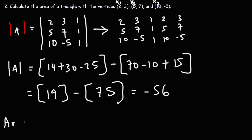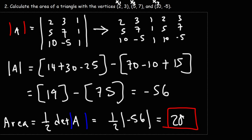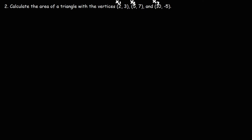The area is going to be one-half of the determinant of the matrix. But the area has to be positive, so we're going to use the absolute value of negative 56. Half of 56 is 28, so the answer is 28 square units. That's how you could calculate the area of a triangle using matrices and determinants. Now let's confirm this answer by graphing this particular triangle.